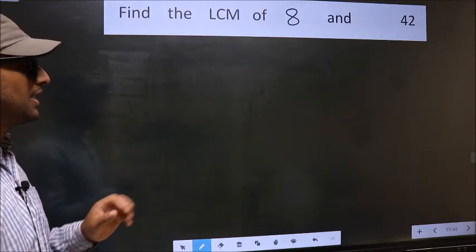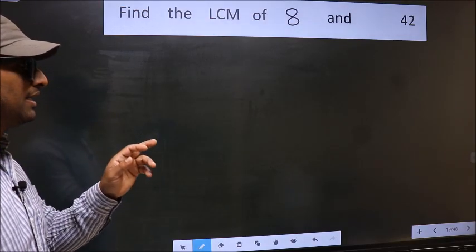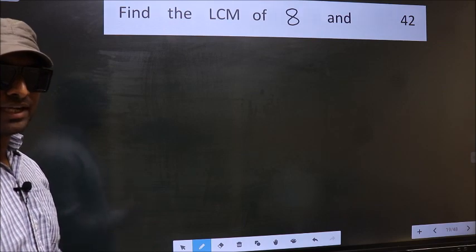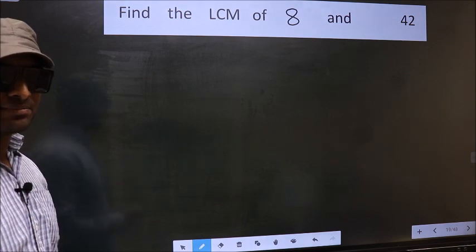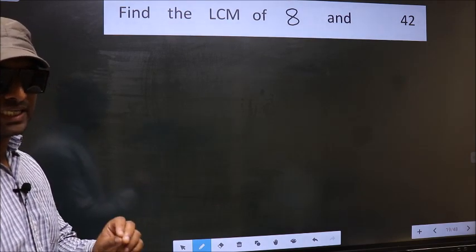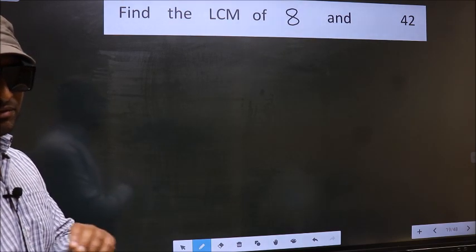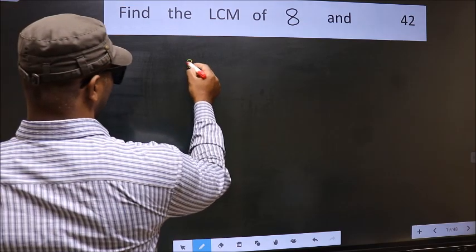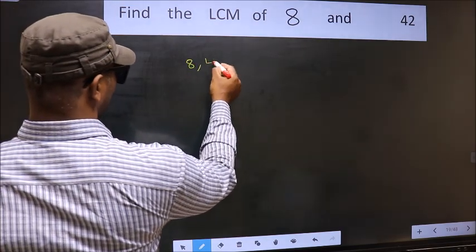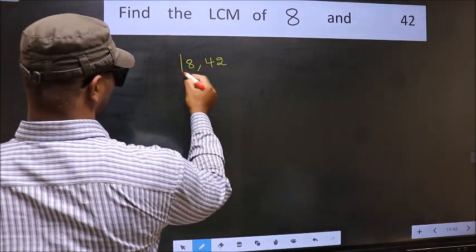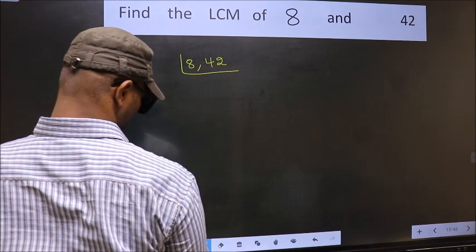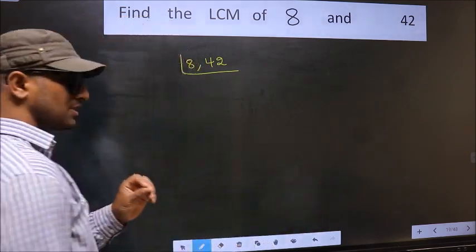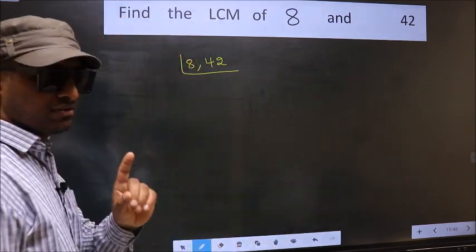Find the LCM of 8 and 42. To find the LCM, first we should frame it in this way — that is 8 and 42. This is your step 1.